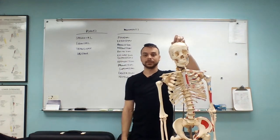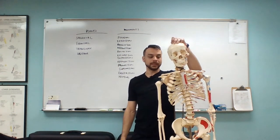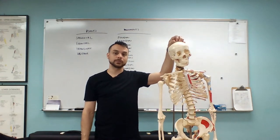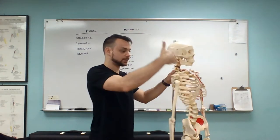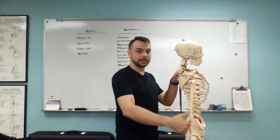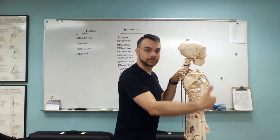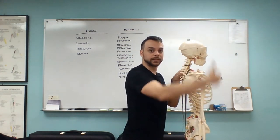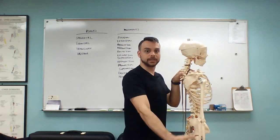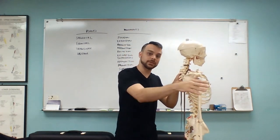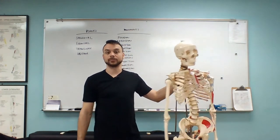The next plane we're going to look at is the frontal plane. This one's very easy to remember because it's going to divide our body into front and back parts. This plane is going to slice Mr. Bones at the side, running straight across and cutting him into front and back — basically like taking him through a little meat slicer and cutting little slices off.